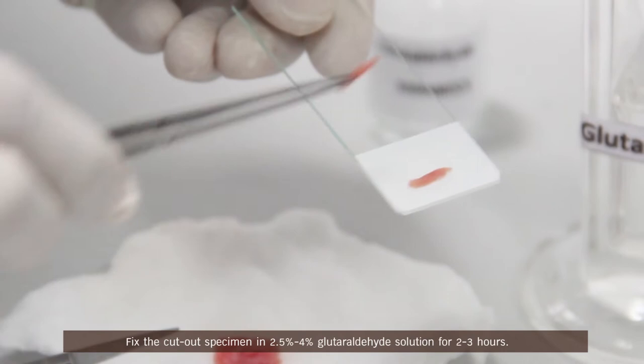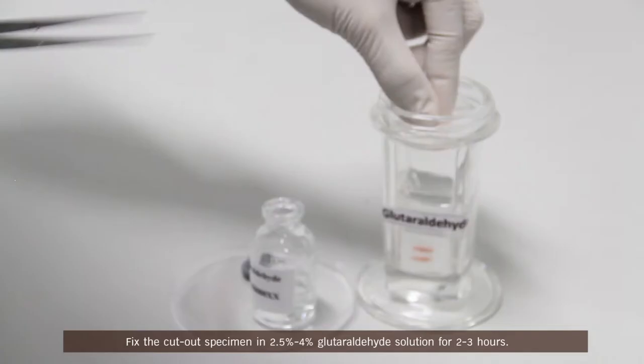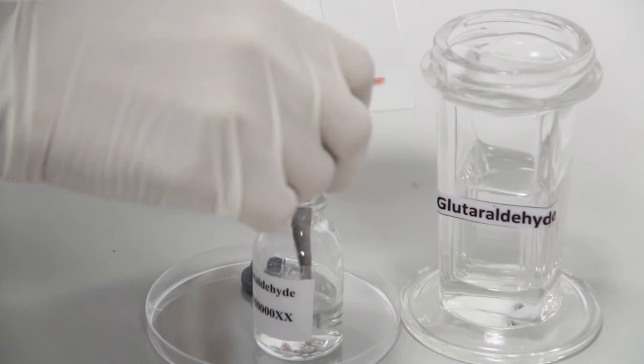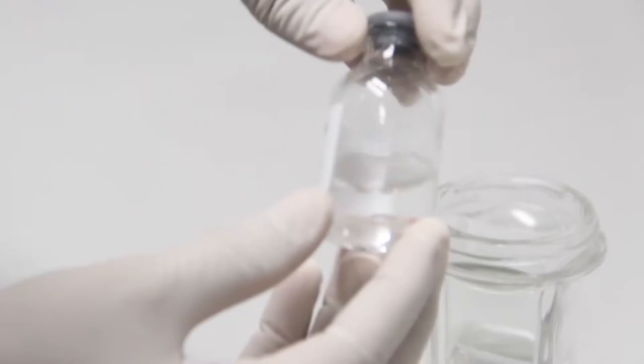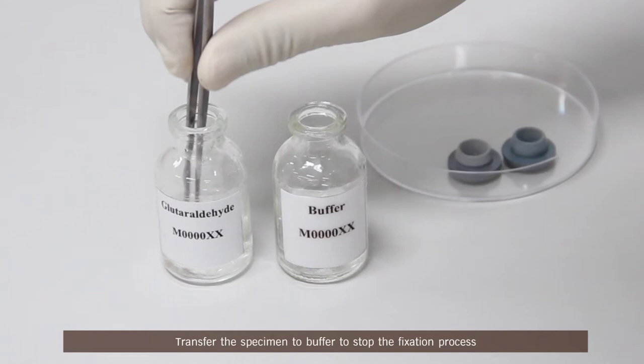Fix the cut-out specimen in 2.5-4% glutaraldehyde solution for 2-3 hours. Transfer the specimen to buffer to stop the fixation process before sending to the electron microscopy laboratory at room temperature.